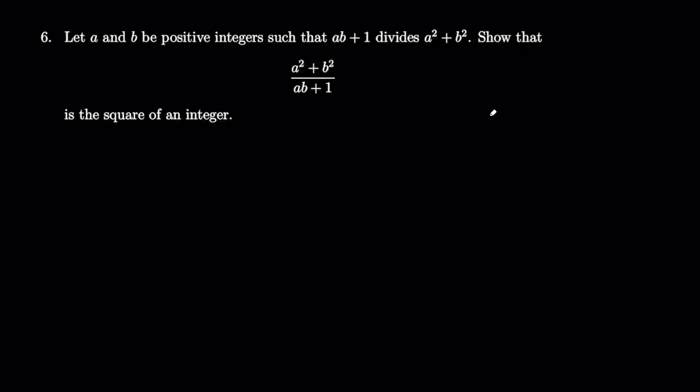And the proof of this question is something called proof by infinite descent. It's a well-known way of proving particular questions. It's a form of proof by contradiction.